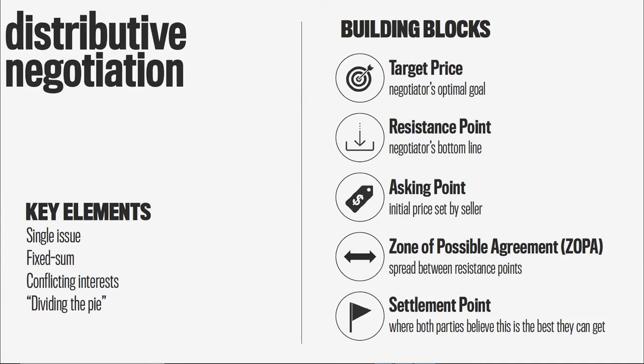The asking price is the initial price set by the seller. When I go into a car dealership, there is the manufacturer's suggested retail price, and that has a tendency to start the negotiation. The settlement point is where we end up. In a conceptual way, these are the building blocks that go into every distributive negotiation: Where would you like to come out? What is the highest or lowest — depending on what you're negotiating over — that you would go? What is the initial offer? And where do you end up?